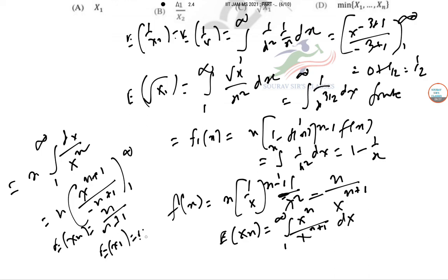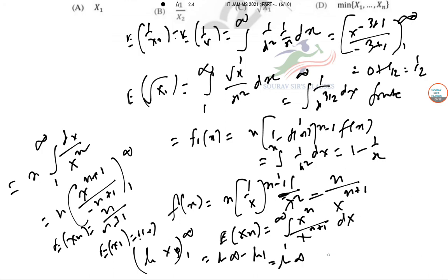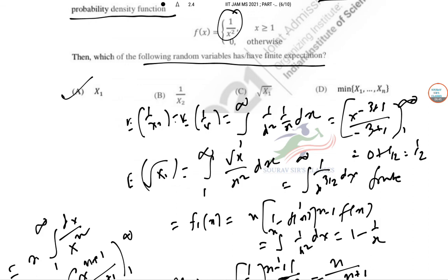However, E[X₁] (minimum order statistic) involves ∫₁^∞ (1/x) dx = log x |₁^∞ = log∞, which diverges. So E[X₁] is not finite. Keeping all these results in mind, the correct answers for question 36 are options A, C, and D.